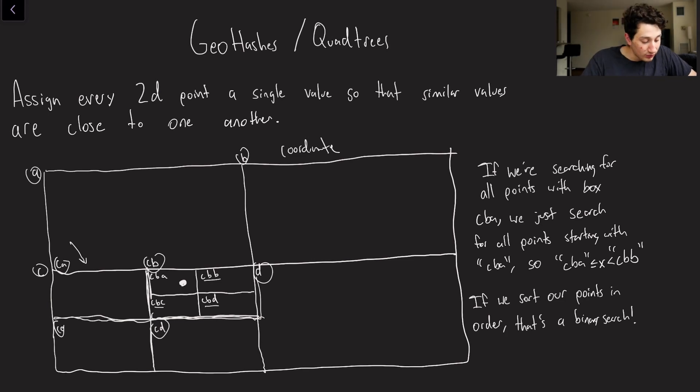So now, imagine we've got this one point over here. Let's say that I was searching for all of the points within box CBA. In this case, what we would basically do is know that every single point within a box is going to be prefixed by the string name of that box. So regardless of whether we break CBA down anymore, and let's say this was box CBAD, the point is we know that any point in this area starts with the string CBA.